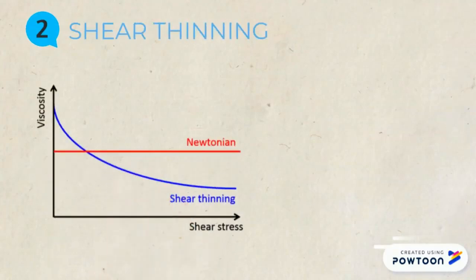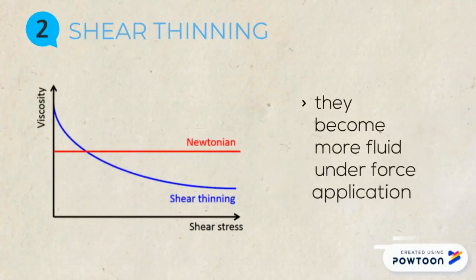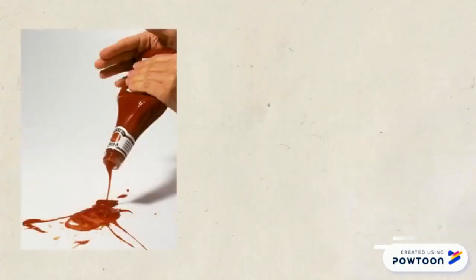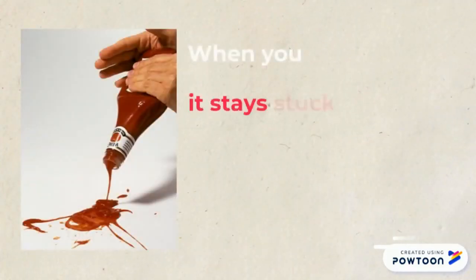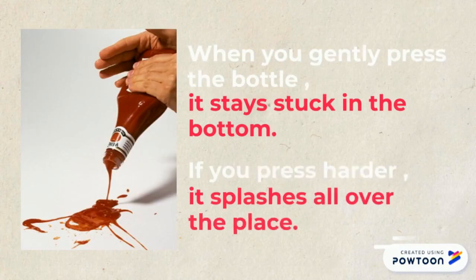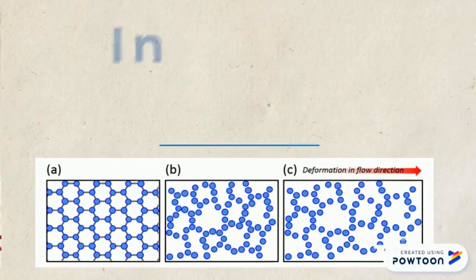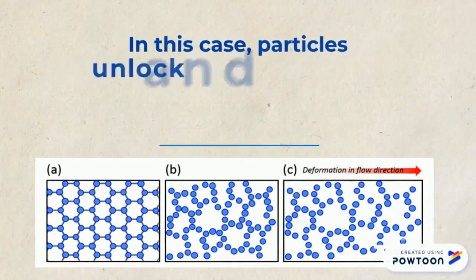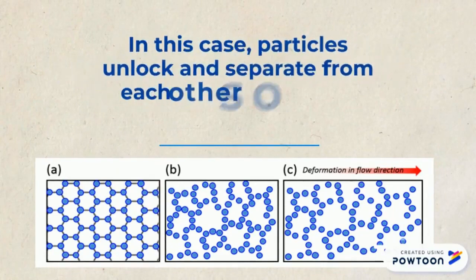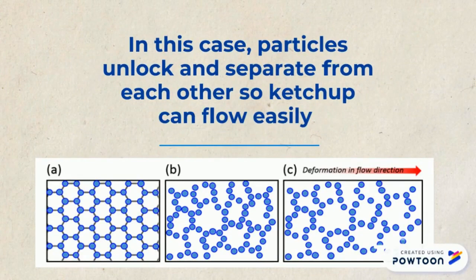Shear thinning fluids decrease in viscosity as stress increases — they become more fluid under force application. Such as ketchup: when you gently press the bottle, it stays stuck at the bottom, but if you press harder, it splashes all over the place. In this case, particles unlock and separate from each other, so ketchup can flow easily.